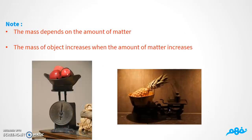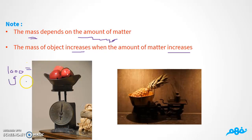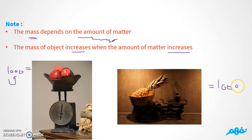Note number one: the mass depends on the amount of matter. The mass of the object increases when the amount of matter increases. For example, if you look at picture one, we have three apples equal to 1,000 grams. In the second picture, we have only one pineapple equal to 100 grams. So we have less mass because we have less amount of the object, and more mass because we have more amount of the object.